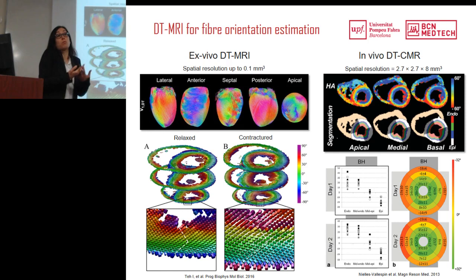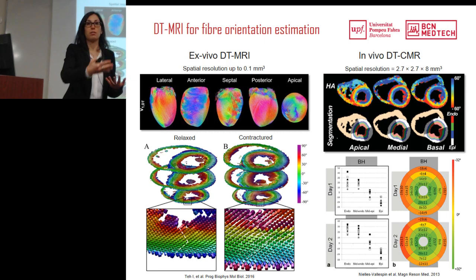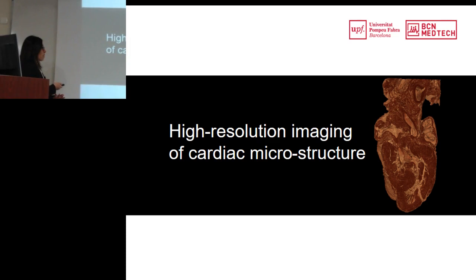To make models more accurate, we need high-resolution imaging techniques to describe the microstructure of the heart — all the trabeculations, the false tendons, and fiber orientation. What I'm going to explain now is all the work I've done during these two years using synchrotron imaging to describe this.